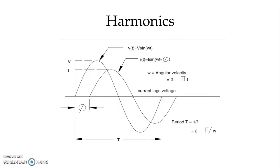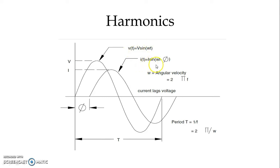We can see the voltage and current waveform, and observe the phase difference φ between them. The voltage waveform is sinusoidal with peak value V, and the current waveform has peak value I. The equations are v(t) = V sin(ωt) and i(t) = I sin(ωt − φ). The angular velocity is 2πf, the period T to complete one cycle is 1/f, which also equals 2π/ω.